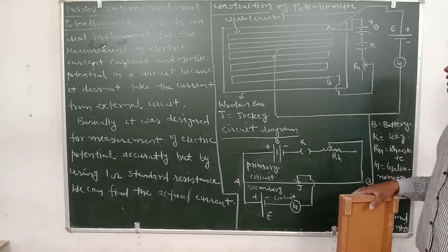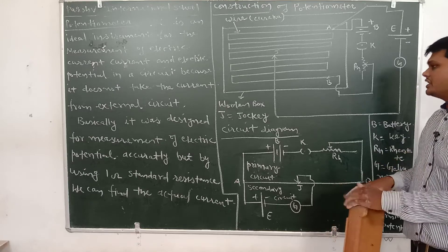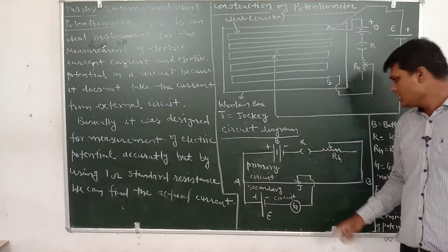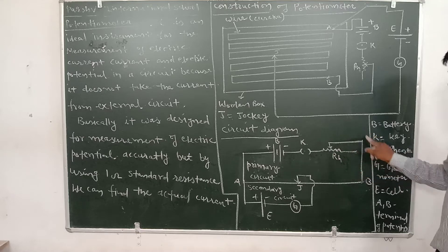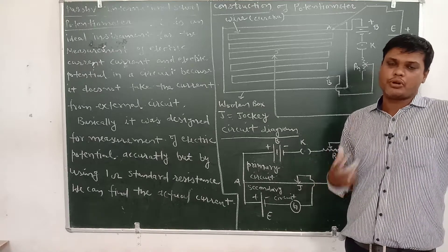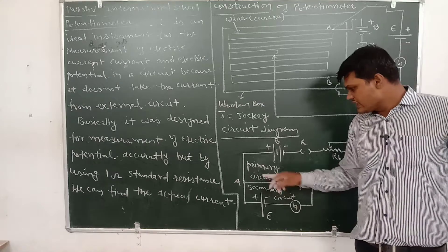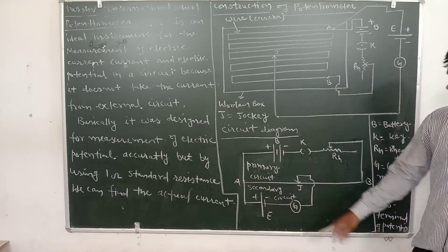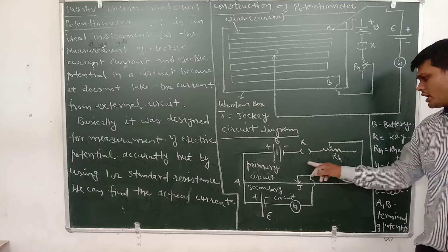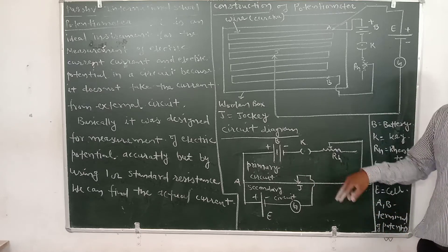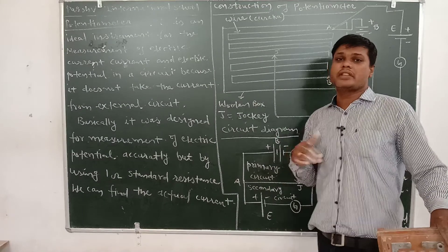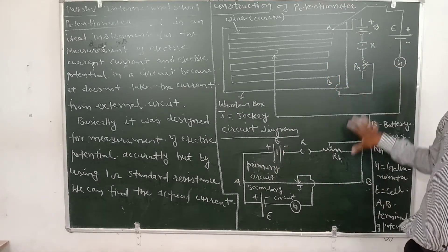We can draw the circuit diagram. Battery is connected to the potentiometer wire at point A, and battery negative to point B through a key and rheostat — this is the primary circuit. For the secondary circuit, a cell E is attached from point A, whose positive terminal connects to point A and negative connects to the galvanometer. The galvanometer is then connected to the jockey J. This is the standard construction of the potentiometer. The mathematical derivation will be done in the next class.